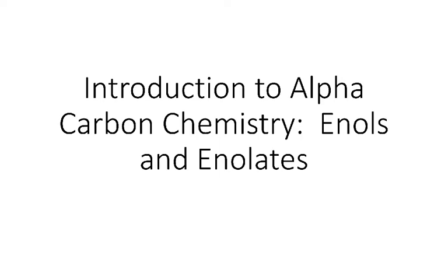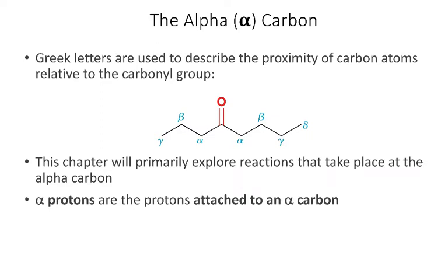This video is an introduction to the entire chapter on alpha carbon chemistry, which involves the reactions of enols and enolates. The reactions in this chapter involve carbonyl compounds. When describing the proximity of carbons to the carbonyl carbon, we use Greek letters: the first carbon away is the alpha carbon, then beta, then gamma. We're primarily interested in reactions involving the hydrogens attached to the alpha carbons.